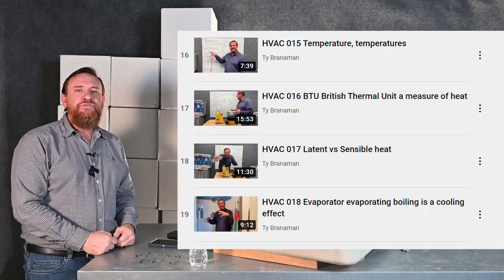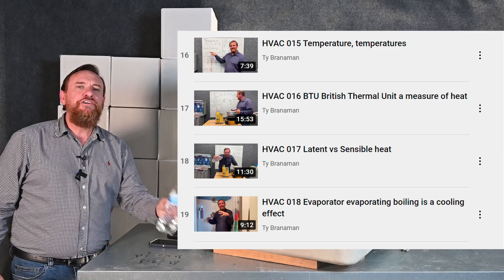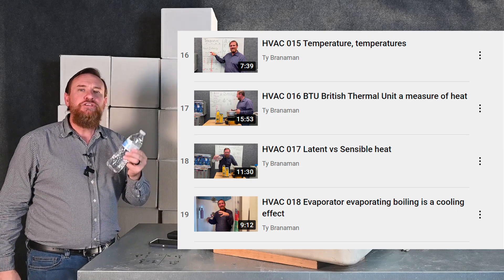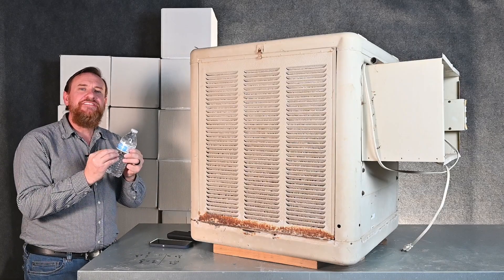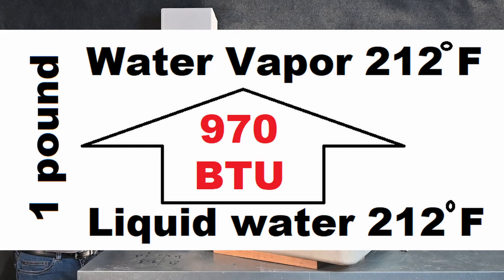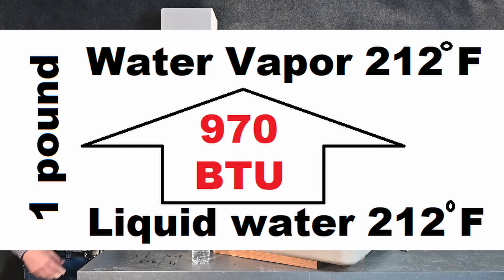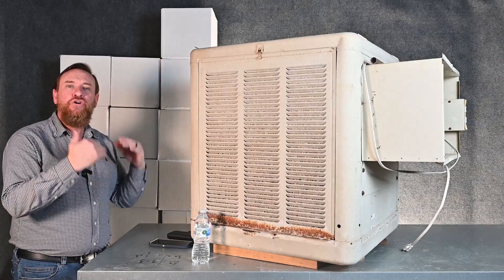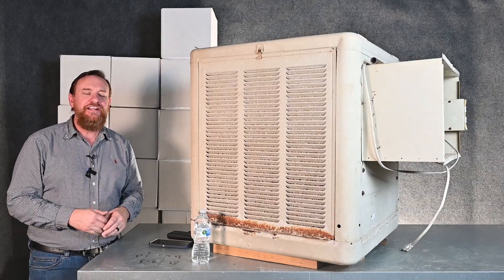If you remember earlier, we talked about BTUs as heat energy. Changing water from a liquid to a vapor — from 212-degree liquid to 212-degree vapor — took 970 BTUs of energy to make it change state. That water changing state kept it at a cool 212 degrees Fahrenheit.